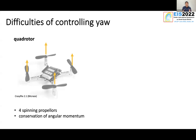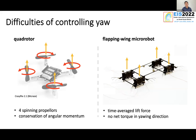But why is controlling or actuating yaw so difficult for the flapping wing robot, and why is it not a problem for the traditional quadrotor? For the traditional quadrotor, we have four spinning propellers, so we can use the conservation of angular momentum to regulate the heading angle. But for our flapping wing micro robot, we utilize time-averaged lift force, meaning all four lift forces are pointing upward and in parallel. So we cannot generate any net yaw torque to regulate the heading angle.